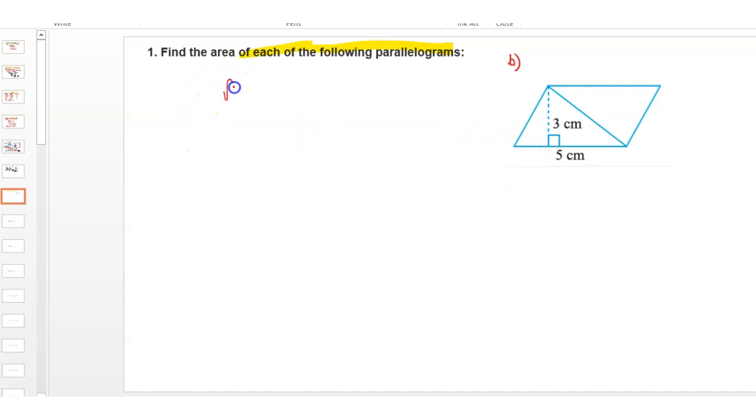First, we write the formula for the area of a parallelogram. It is base into height. So here the base is 5, base is equal to 5 centimeters, and height is equal to 3 centimeters.